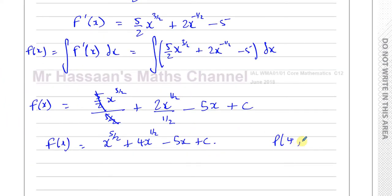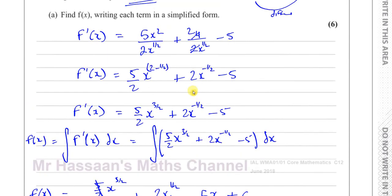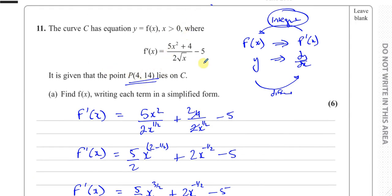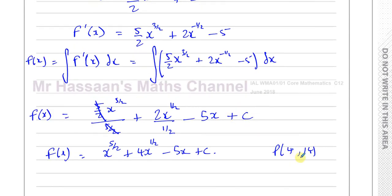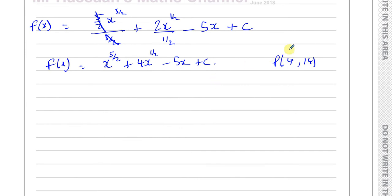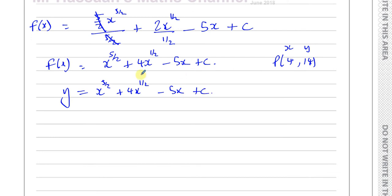We can find the actual function because we're given a point on the curve, which lets us find c. Since the point P (4, 14) lies on the curve, y equals 14 when x equals 4. So we substitute: 14 equals 4 to the power of 5 over 2, plus 4 times 4 to the power of a half, minus 5 times 4, plus c. Remember, x to the power of m over n means the nth root of x to the power of m, so 4 to the 5/2 is the square root of 4 to the power of 5.